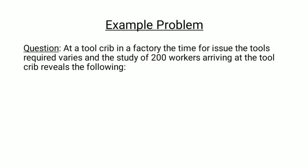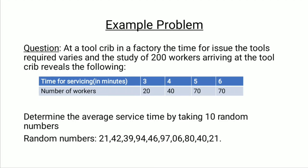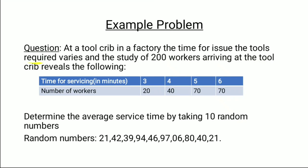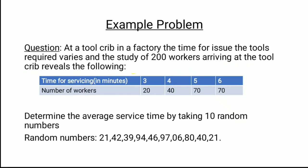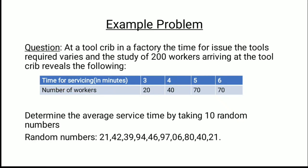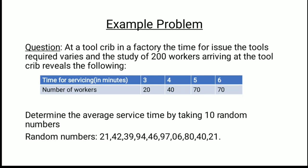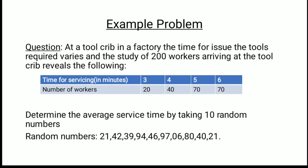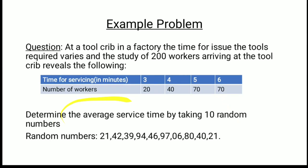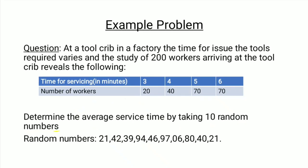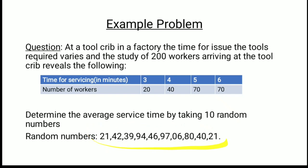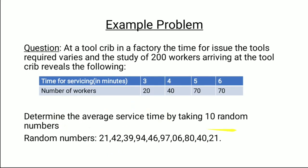Let us see these steps through an example. The problem states: at a tool crib in a factory, the time for issue of a tool varies. A study of 200 workers arriving at the tool crib reveals the following data — service time in minutes and the number of workers. 20 workers have a service time of 3 minutes, 40 workers have 4 minutes, 70 workers have 5 minutes, and 70 workers have 6 minutes. We need to determine the average service time using 10 random numbers, which are already given in the problem.